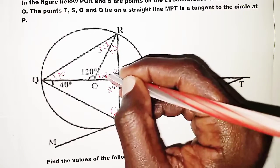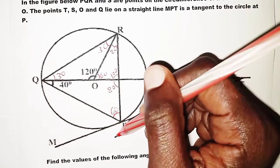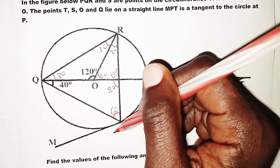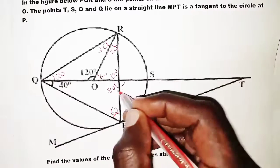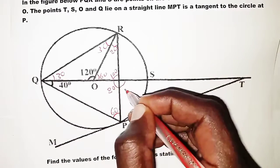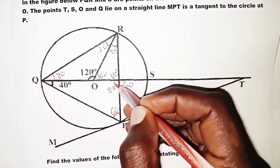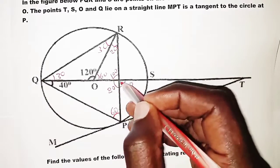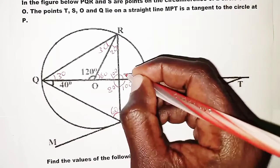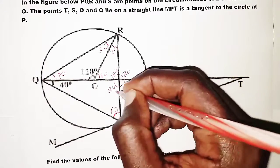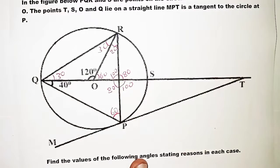Checking: 60° plus 100° plus 20° equals 180°, confirming the triangle angles are consistent. Angles on a straight line give us 100° at that point. Vertically opposite angles are equal, so the angle at that intersection is also 80°. The angles about a point sum to 360°.